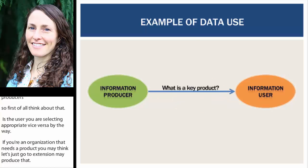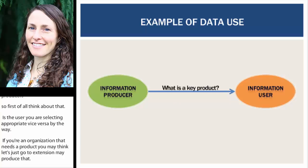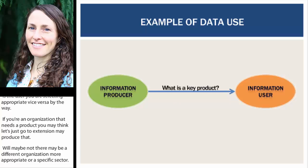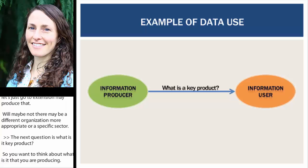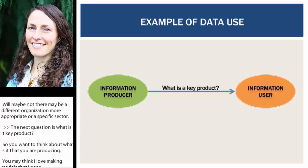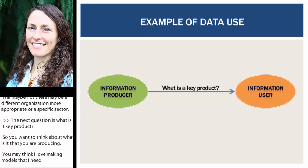The next question is: what is the key product? You really want to think about what it is you're producing. You may think, 'I love making models, and I need producers, so I'll just make a producer model.' But when you look at what producers actually use, models are oftentimes too complicated — they don't make sense to producers, who want something different. So this is really going to help you understand what that key product is.